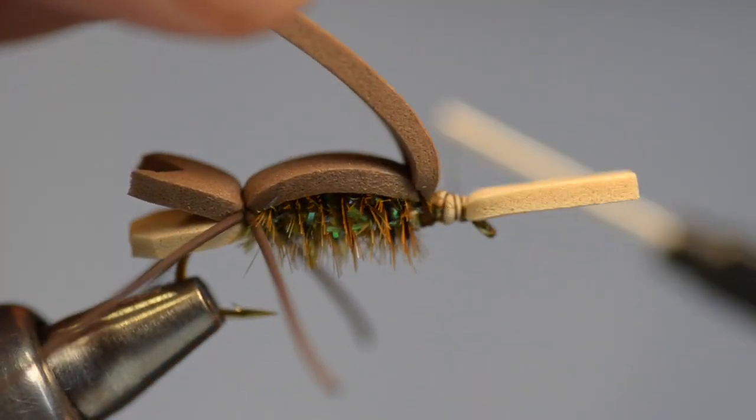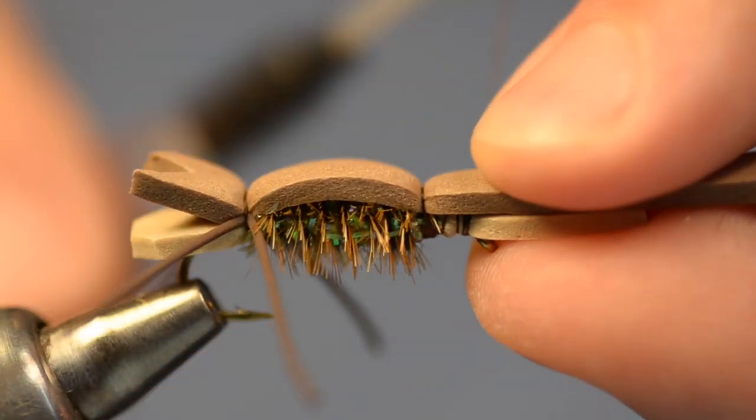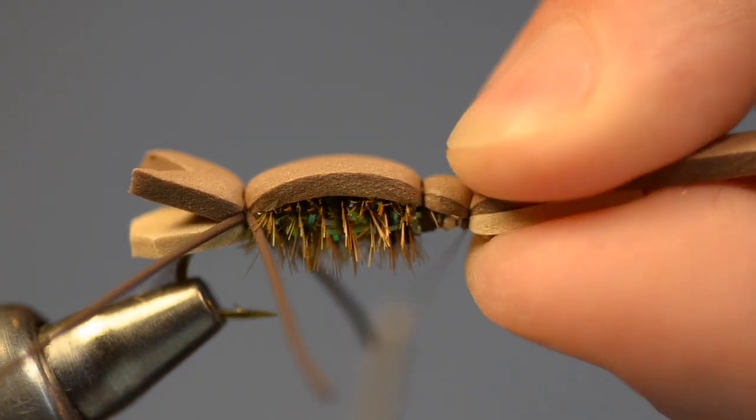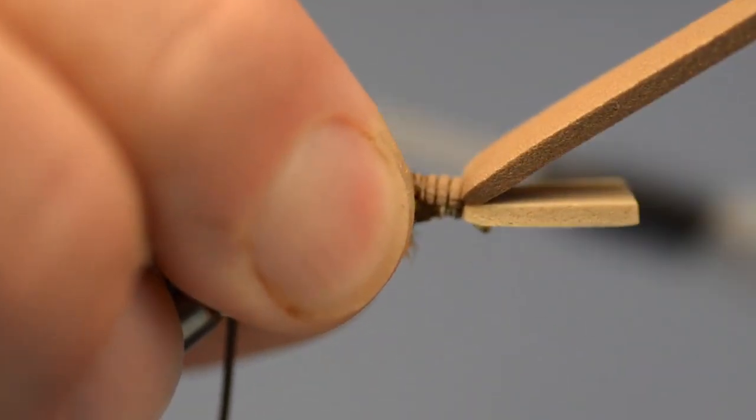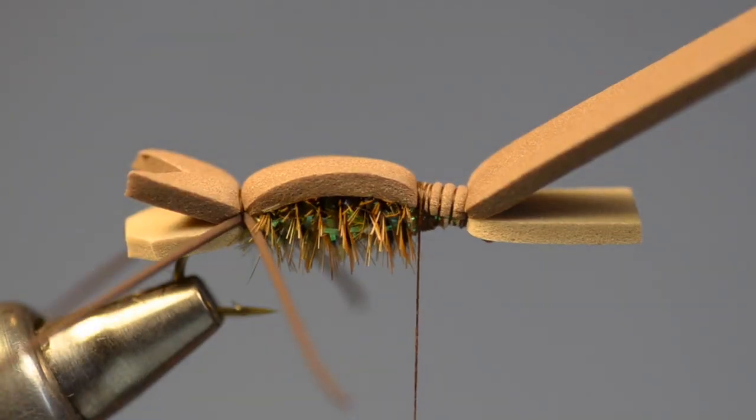And to keep it all centered, I'm going to creep my thread forward underneath, just over the tan foam. And then I'll tie that brown foam down again. And then I can crosshatch back over the top of this brown foam to anchor everything in place. We're looking pretty good here so far.